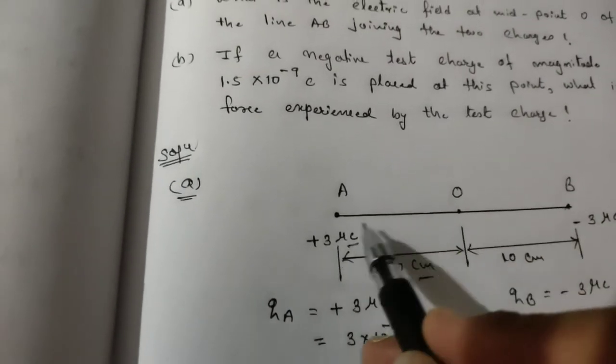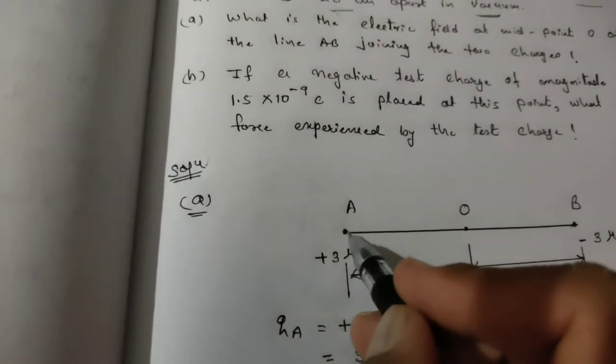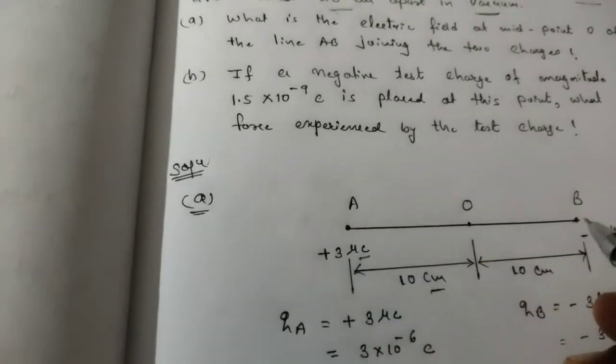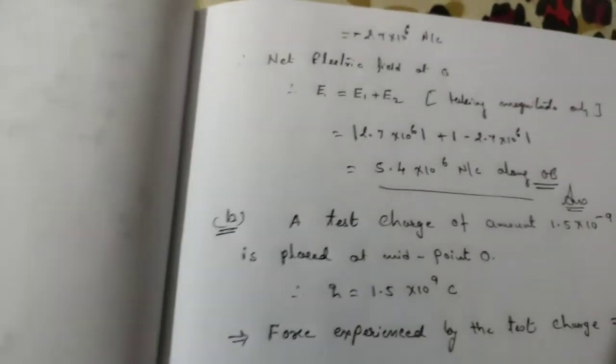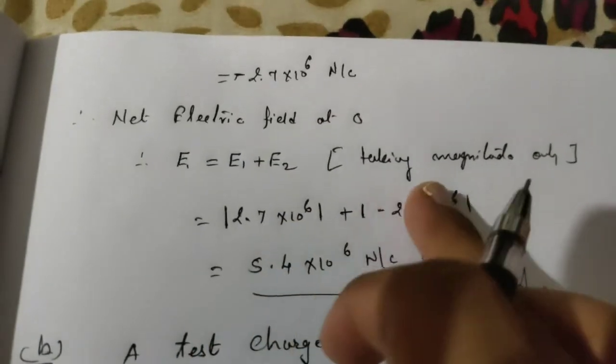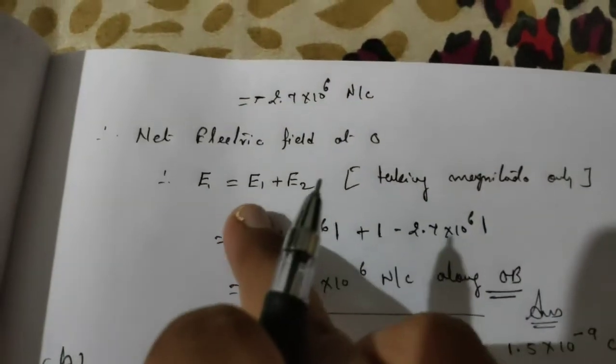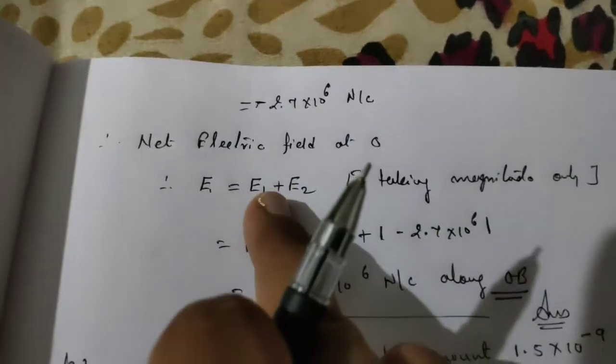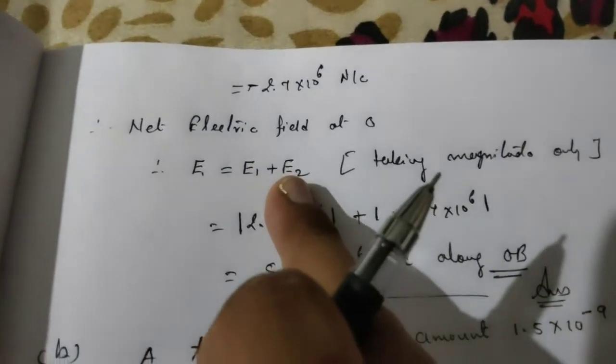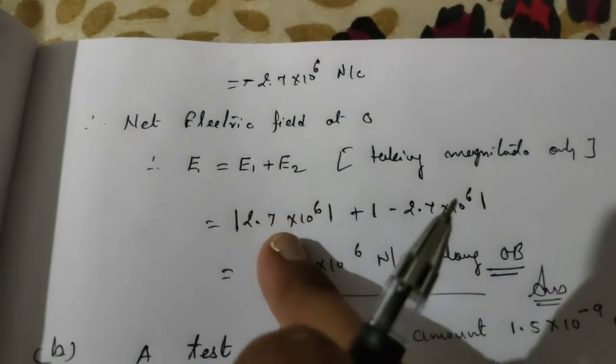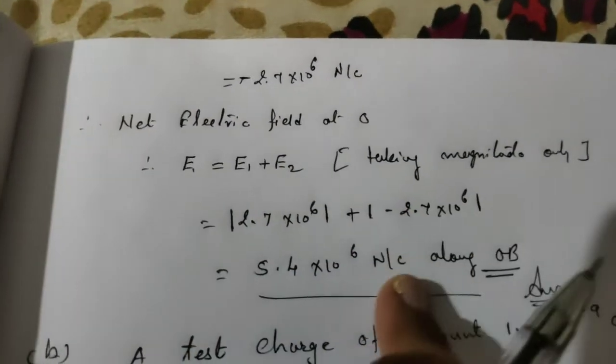As per the superposition principle, net electric field here - positive means radially outward and negative means radially inward. Net resultant electric field, we consider the magnitude.